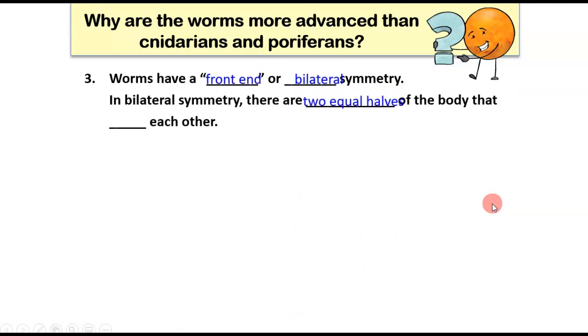Now all of the worms that we're going to study are bilaterally symmetric. And some people call that front end symmetry because the sense organs are concentrated in the front end, the head of their body. So in bilateral symmetry, there are two equal halves of the body that mirror each other. Just like you and I, we are bilaterally symmetric. So if you imagine cutting us right down the middle of our face through our nose, we would have two mirror images of each other. And that's the only direction that you can cut us in half and get those two mirror images, is from top to bottom, vertically like that. And so when that happens, we consider an animal that you can only divide in two equal halves that mirror each other in one way, we call that a bilaterally symmetric animal. Most animals that you're familiar with are bilaterally symmetric.